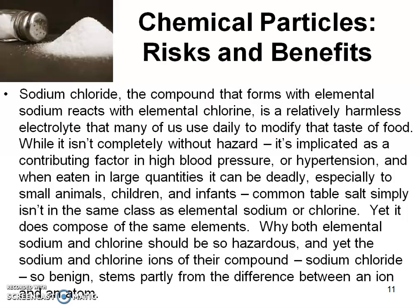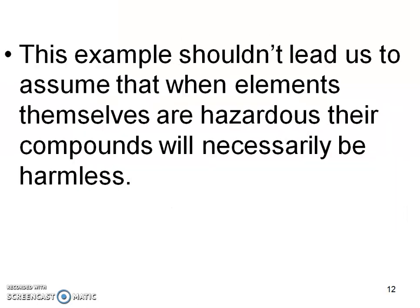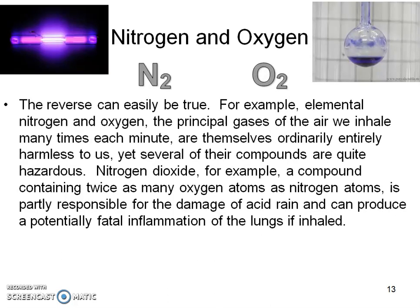Why both elemental sodium and chlorine should be so dangerous, and yet the sodium and chlorine ions of their compound, sodium chloride, so benign — stems partly from the difference between an atom and an ion. So there's going to be a real difference in atoms and ions. We want to remember that each individual atom and molecule, and the compounds they're forming, are going to be varying — it's not going to be the same all around.